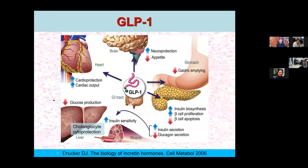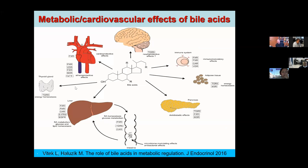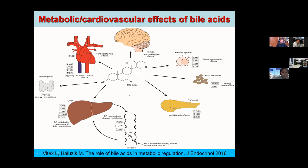This picture shows the target tissues and organs of GLP-1 — not only the heart and vessels, but also liver, muscles, pancreas, the gastrointestinal tract, and brain. Another picture shows how bile acids can bind to different receptors localized in different organs and tissues. There is an organ- and tissue-dependent distribution of these various receptors, and through all of these, bile acids can exert their biological effects.